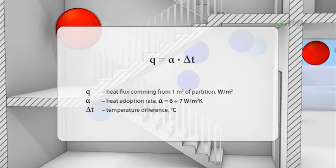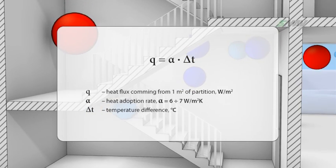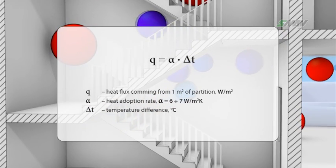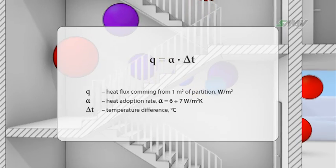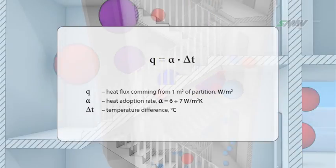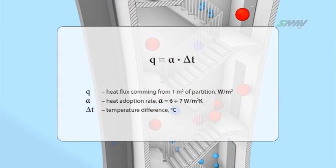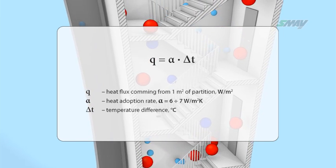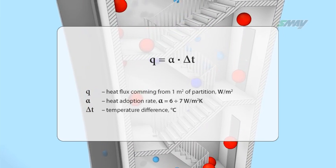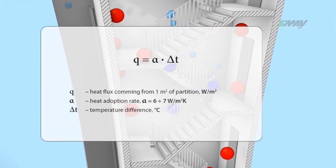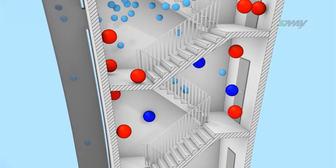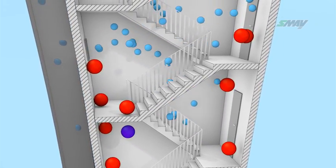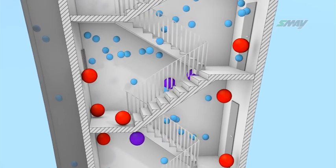As an example, to heat 1 cubic meter of air by 10 degrees in 10 minutes, it should be heated with a 22 watt energy stream. In order to reduce the temperature of 1 cubic meter of concrete by 10 degrees in the same amount of time, roughly 34,000 watts of cooling power would have to be provided, which is 1,550 times as much.